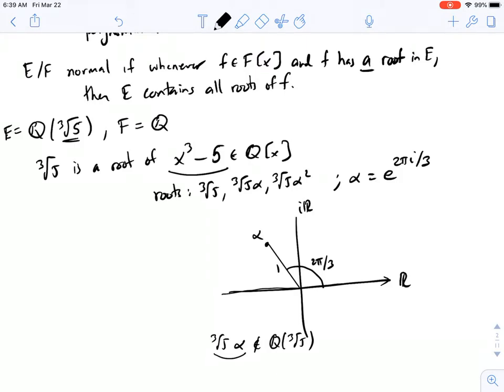In particular, we have just found a polynomial, x cubed minus 5, which has a root, cube root of 5, which is in the extension field E, but it has another root, cube root of 5 times alpha, which is not in E.